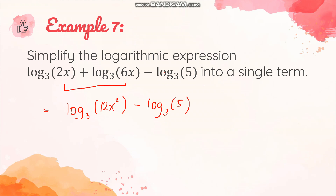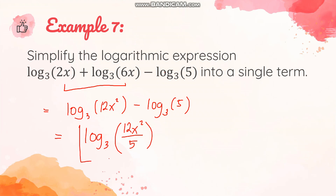Keep simplifying. Now with the operation being subtraction, we apply the second law — the law of quotient — and write the arguments as a fraction. We get logarithm of 12x² over 5 base 3. Check if the arguments can be further simplified or if common terms cancel. If not, this is your final answer: logarithm of 12x² over 5 base 3.